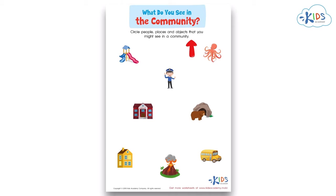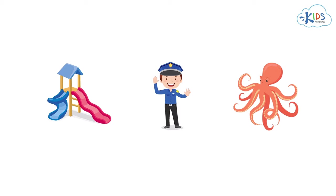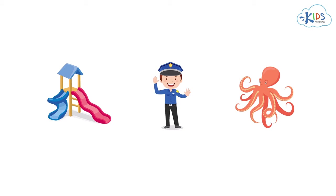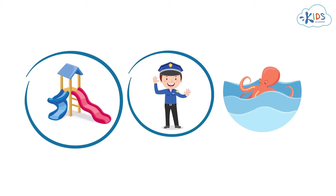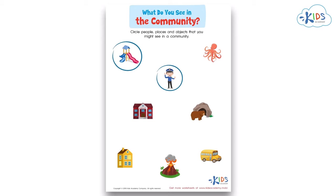Let's get started. First we see a playground, a police officer, and an octopus. Which of these belong in a community? That's right — a playground and a police officer. An octopus belongs in the sea, not in the community. Great work.